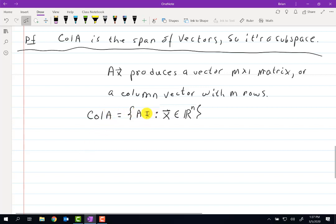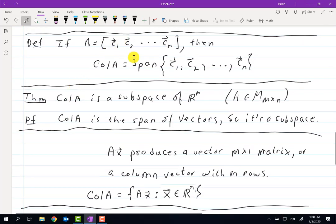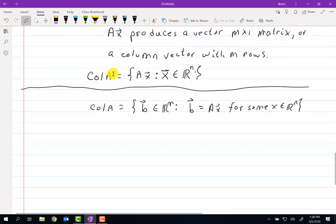Another description is the following. We could look at column space of A as being the set of all vectors b in R^m such that b equals Ax for some x in R^n. So as you see, these seem kind of weird, but they are two different versions of the same thing. And then up here, this is the definition. So you've got the definition, and then we have equivalent forms for the column space. Each of these will have their own uses. It just depends on the circumstance.